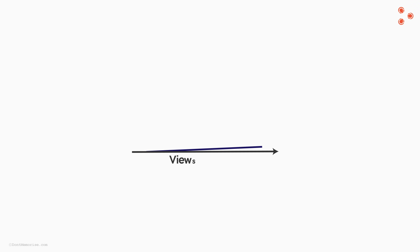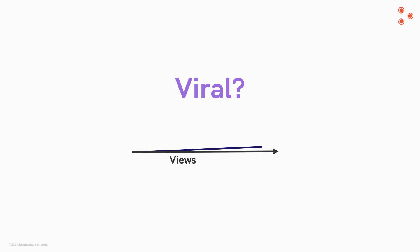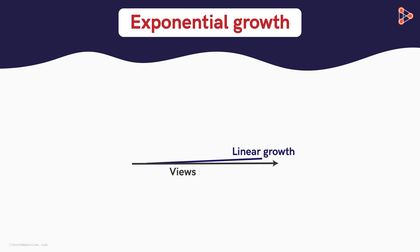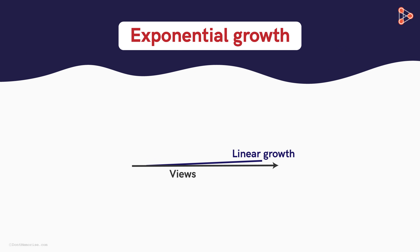But look at this daily chart of views recorded. Is it viral? The line is straight — it's a linear growth. What we really aim for is exponential growth. But do you truly understand what exponential means?